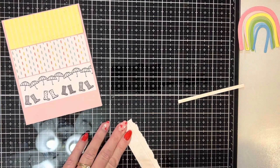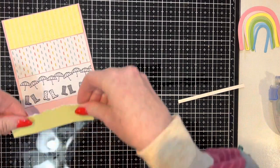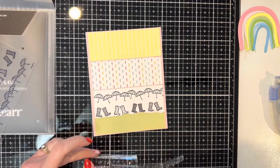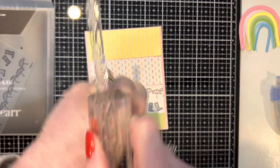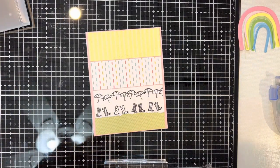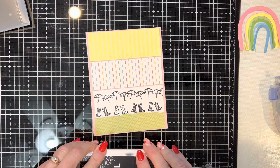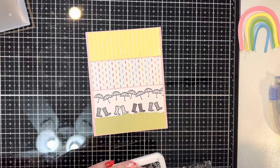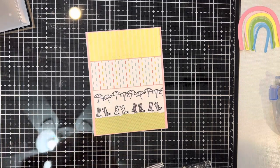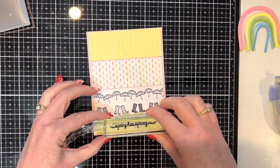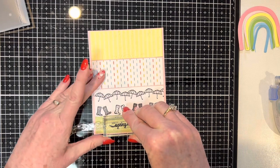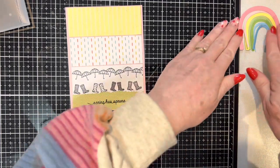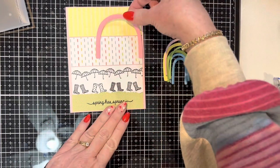After I adhere the grass underneath those little boots, I'm going to stamp a sentiment on that last layer. I just want the words from one of the three sentiments on this stamp, so I'm only inking up part of it, and I'm stamping it in that archival black, and it says spring has sprung. The next thing I'm going to add is this darling little rainbow to the top corner.